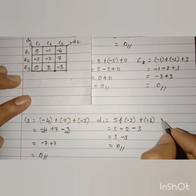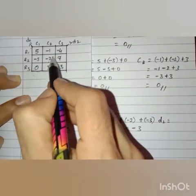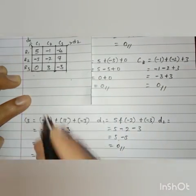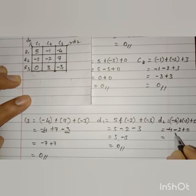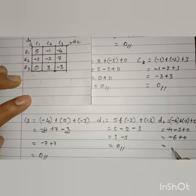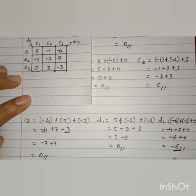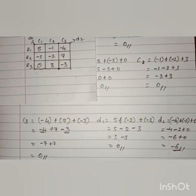Now let us find out diagonal 2. In diagonal 2 we have minus 4, minus 2, and 0. So minus 4 plus minus 2 plus 0. Minus 4 minus 2 is minus 6, plus 0 is minus 6. So diagonal 2 gives minus 6. Since all the rows and columns gave 0 but diagonal 2 did not, this first square is not a magic square.